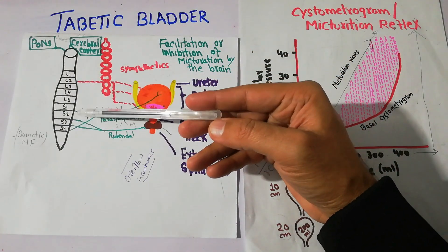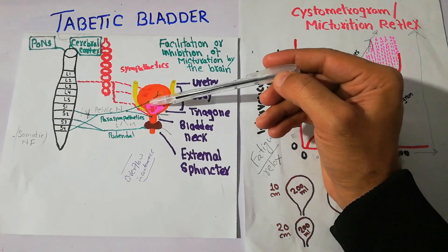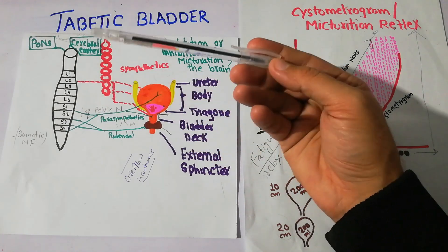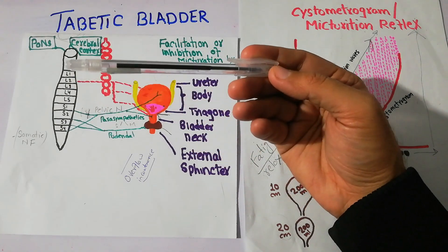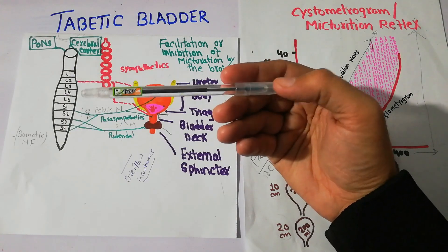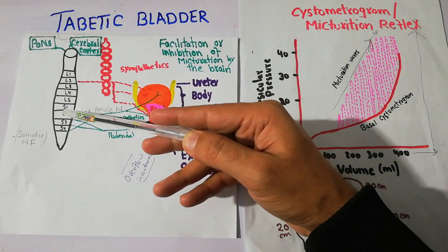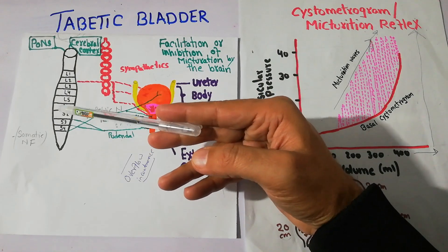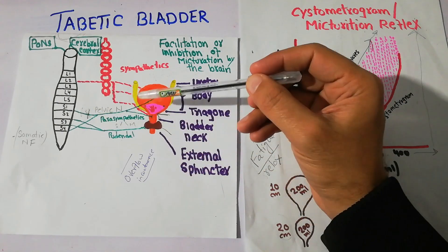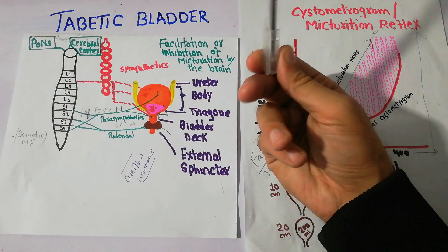This damage of the nerve fibers which take sensory signals from the urinary bladder to the spinal cord can most commonly occur due to crush injuries in accidents, but it can also occur due to infections like syphilis, which leads to fibrosis around the dorsal root ganglion — a condition known as Tabes dorsalis. The resulting bladder condition is known as Taptic Bladder, which is similar to Atonic Bladder.